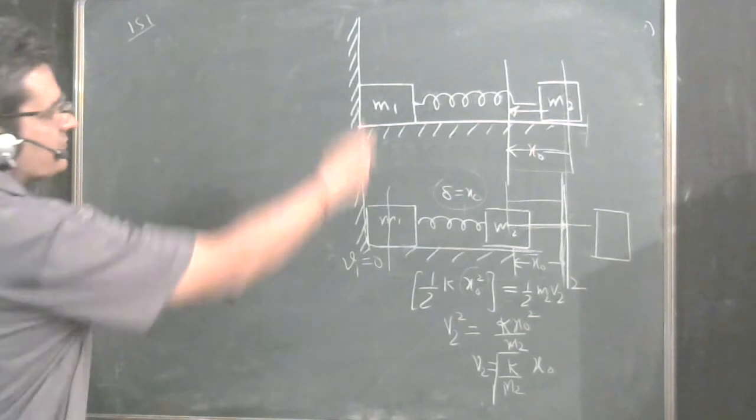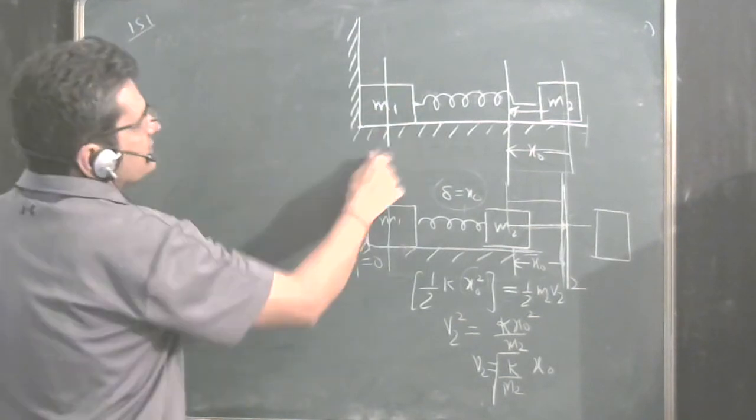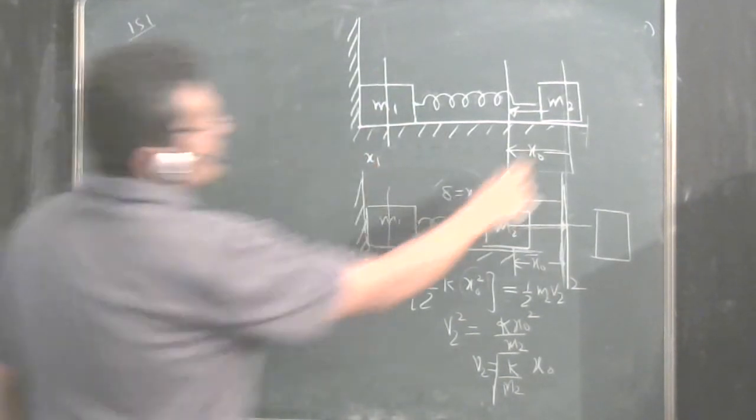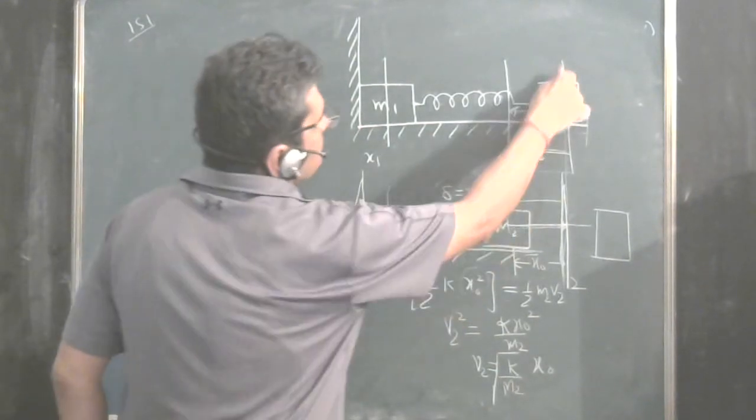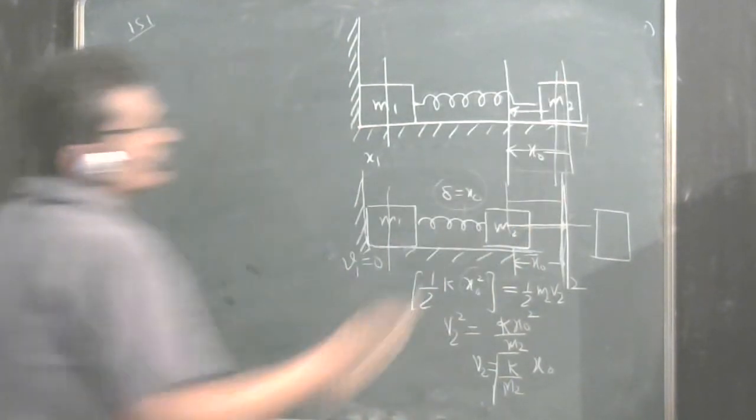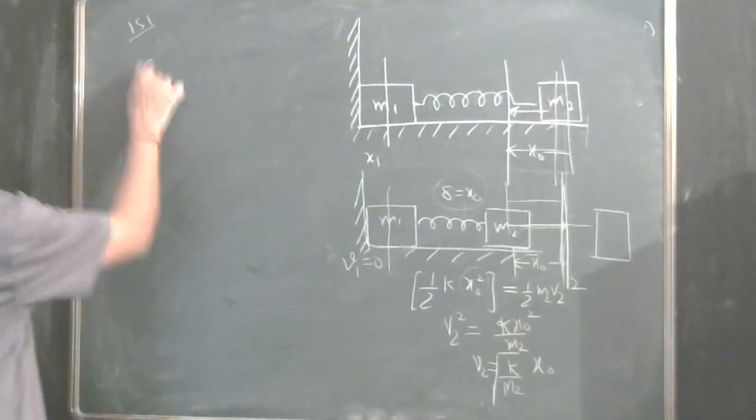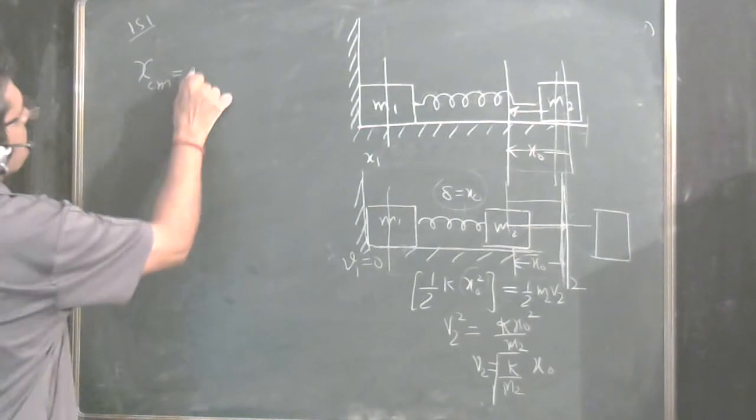What is the center of mass of the system? If M1 is at x1 and M2 is at x2 at any point of time. M2 is at x2 at any point of time.